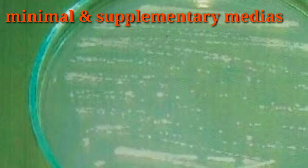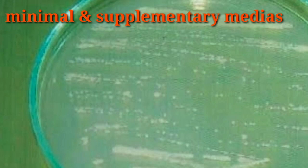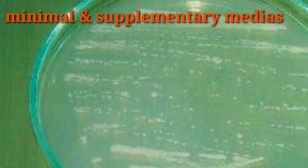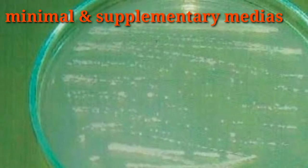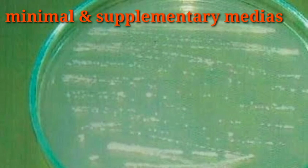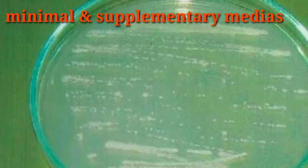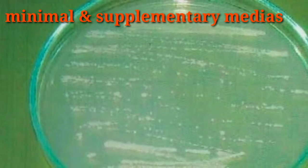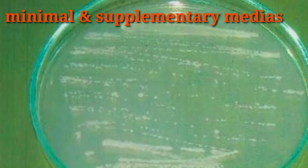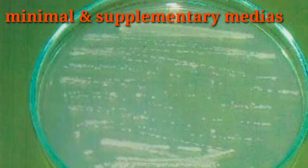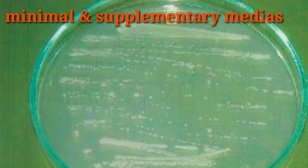Minimal media are those that contain the minimum nutrients possible for growth of wild-type organisms. Minimal media typically contain a carbon source, which may be a sugar such as glucose, various inorganic salts, and water.